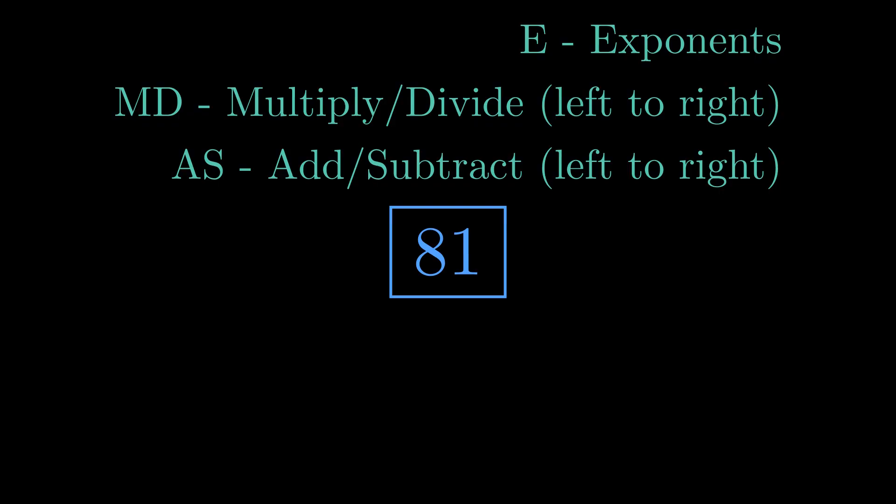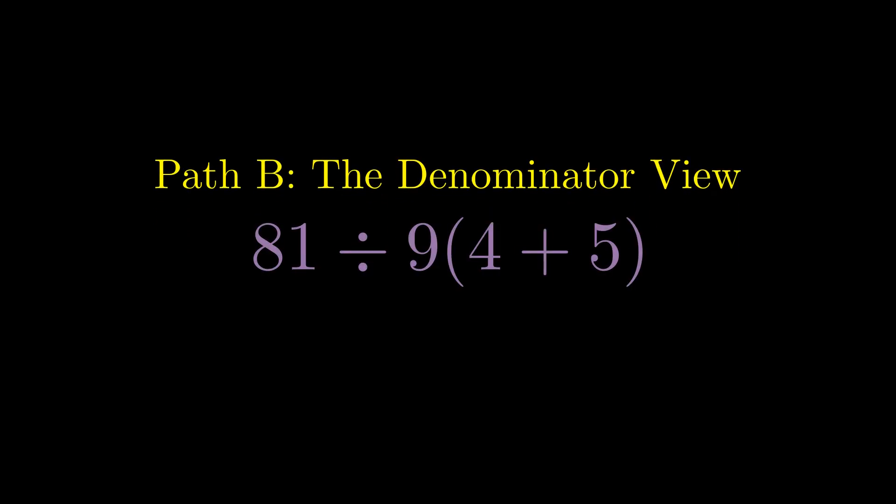Done? Not exactly. What about everyone who sees 1 as the answer? Let's walk their path — it's based on a different, but historically reasonable, interpretation. Some people read this expression and instinctively group what follows the division sign as a single unit: not separate operations, but one cohesive denominator. From this perspective, 9 times the quantity 4 plus 5 is inseparable — it's what you're dividing by.